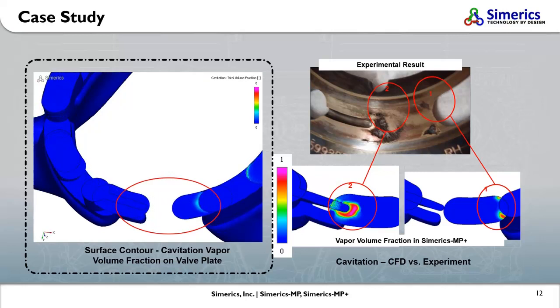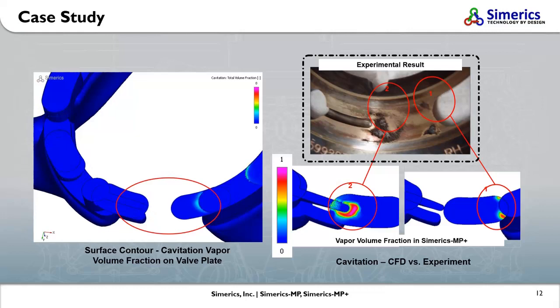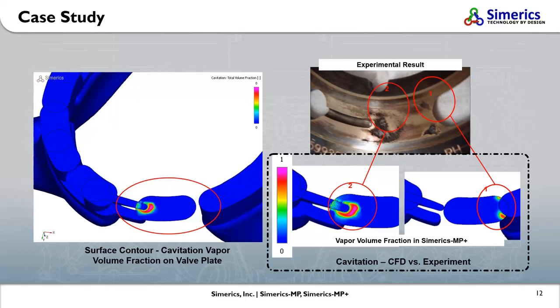This constant formation and collapse of bubbles can occur thousands if not millions of times over the life cycle of a product, and will cause significant erosion on metal surfaces especially. The image at the top right taken after an experiment confirmed this prediction by showing significant pitting and erosion at the same locations on the valve plate.